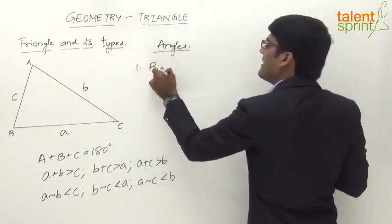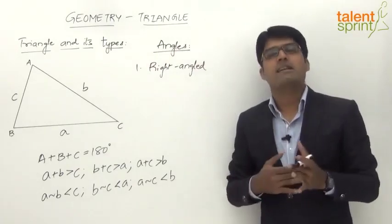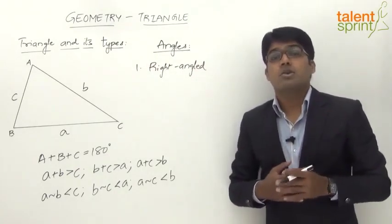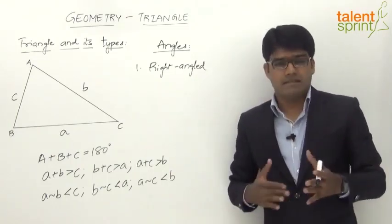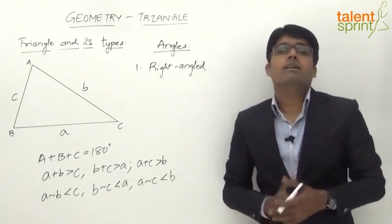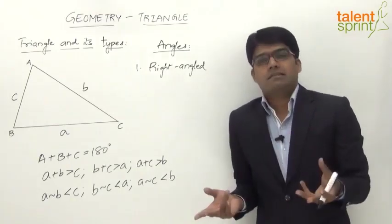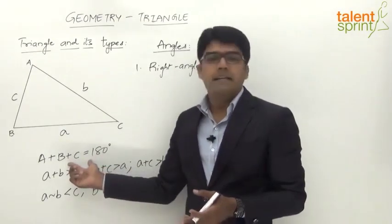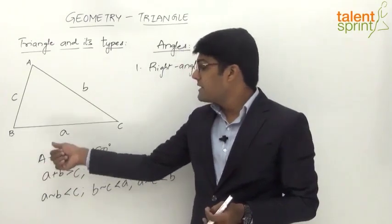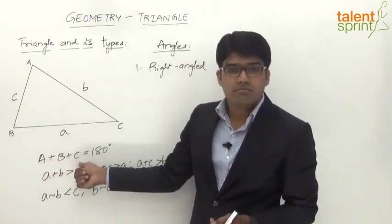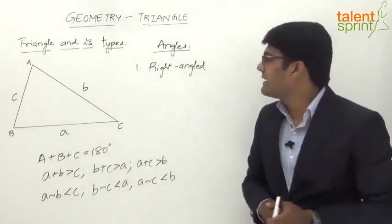The first type is a right-angled triangle. A right angle is equal to 90 degrees, so a right-angled triangle is one which has one of its angles equal to 90 degrees. There can be only one angle equal to 90 degrees in a triangle, because if two angles were each 90 degrees, their sum would already be 180 degrees, leaving the third angle as 0, which is not possible.